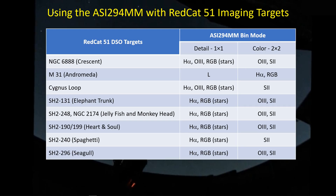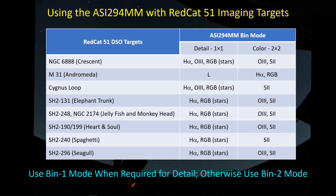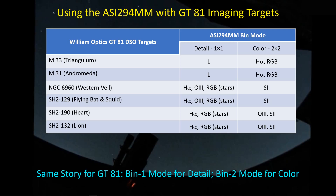These are the imaging targets that I've selected for the Red Cat 51. As a general rule, for a typical SHO target, I get hydrogen alpha in BIN-1 mode. I also collect a short period — less than maybe 20 minutes per filter — for RGB in BIN-1 mode, just so I'll have some RGB stars to replace the SHO stars with. And then on the color side, I have the O3 and S2 filters taken in BIN-2 mode. Whenever I'm shooting for detail I'm using BIN-1, whenever I'm shooting for color I'm using BIN-2. And it's pretty much the same story with the GT-81 and the six targets I've shot over the past couple of months.